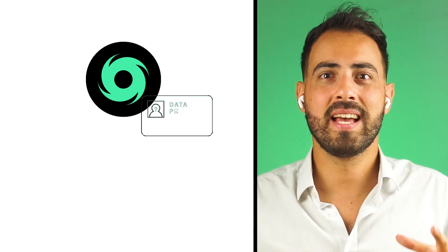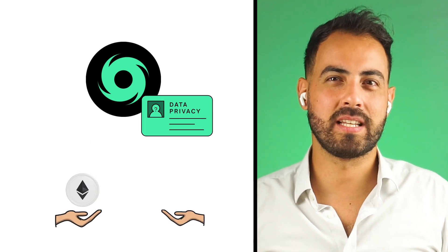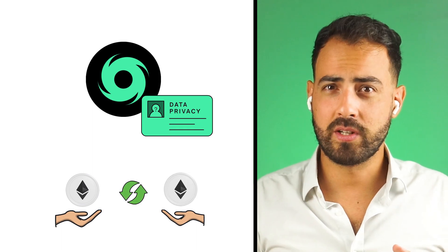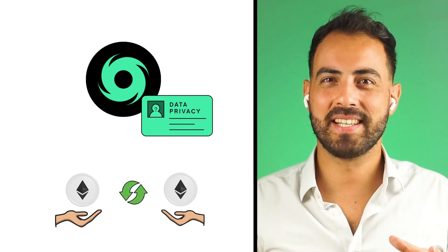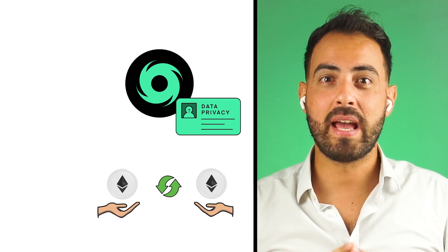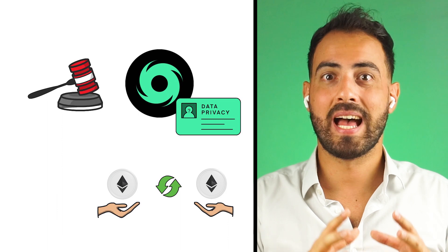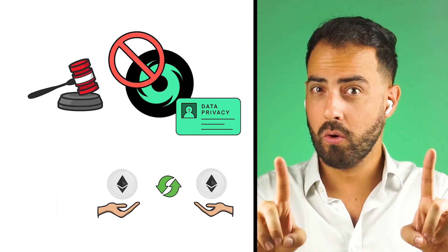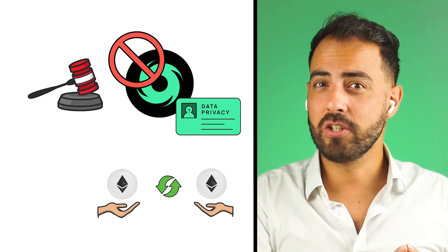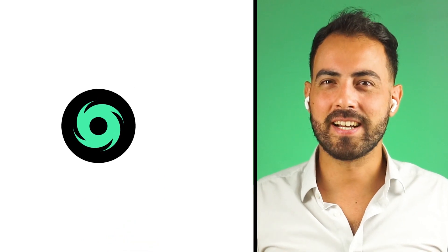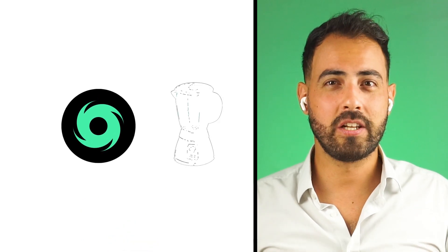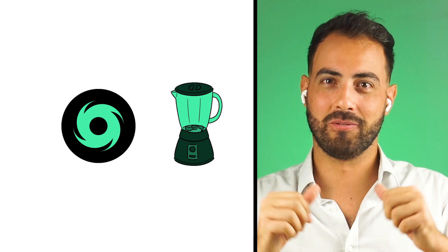In conclusion, Tornado Cash is an incredible tool for preserving anonymity while making Ethereum transactions. Unfortunately, the Lazarus hack spelled a wave of sanctions against the platform, though sanctions do not stop decentralized networks, so Tornado Cash continues to mix away in the background.